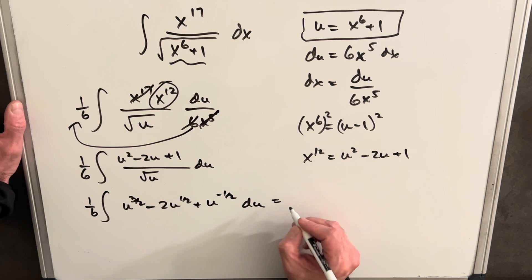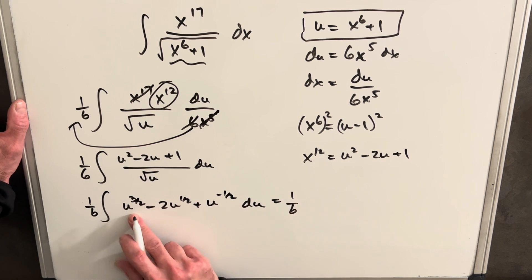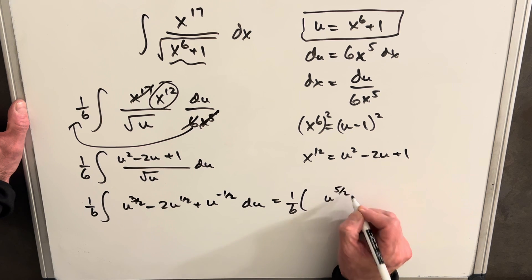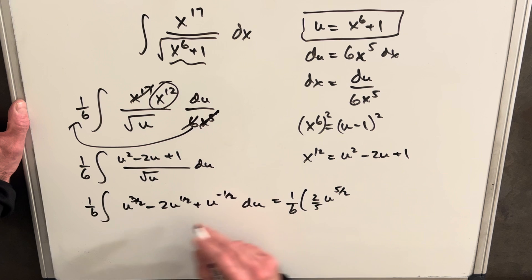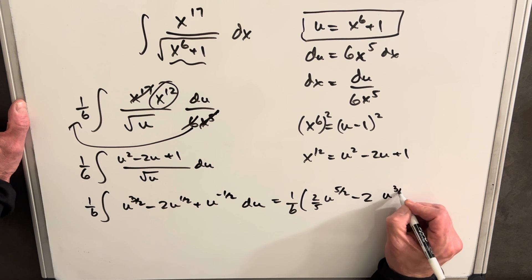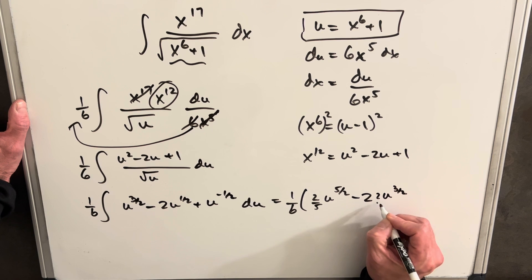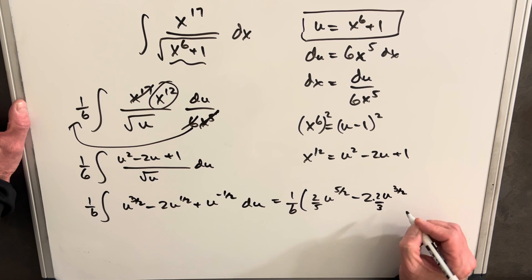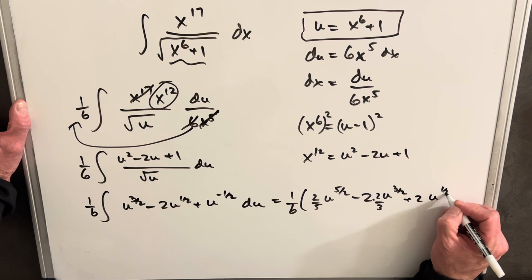Okay, so we can do that now. So we're just going to have integral of u 3 halves. We're just going to have u 5 halves, 2 5ths, minus 2u 3 halves, but then we need to multiply it by 2 3rds. We'll clean this up in a second. And then we're going to have here plus 2u 1 half.